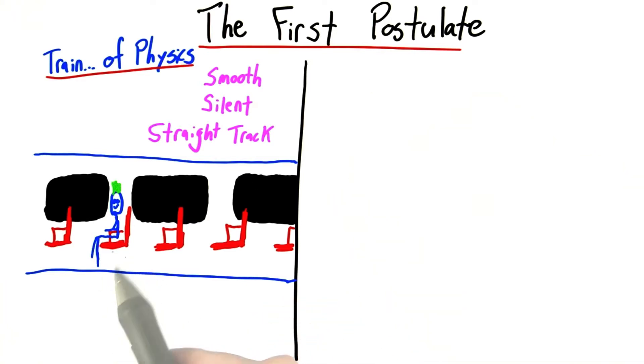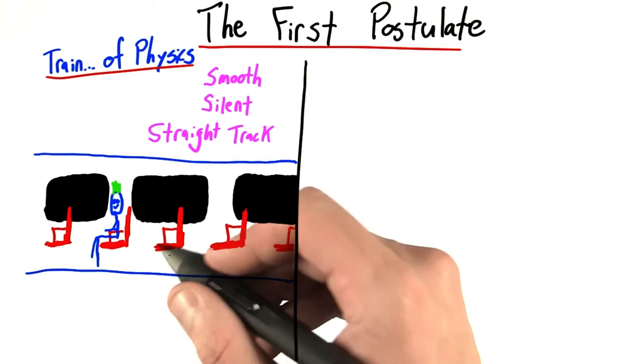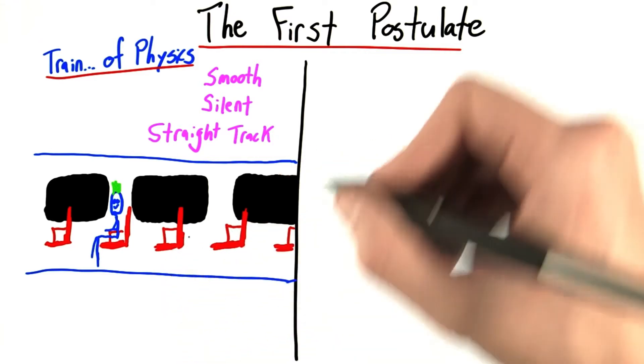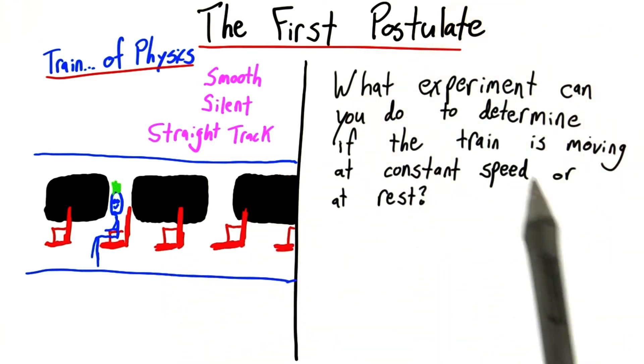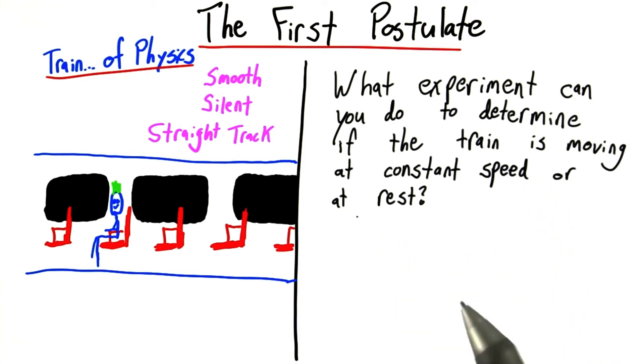So, let's say you just woke up in this train, and you don't know if it's still, if it's at rest, or if it's moving at a constant speed. My question is, what experiment can you do to determine if the train is moving at a constant speed, or if it's at rest on the tracks?